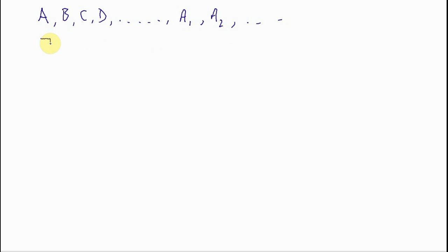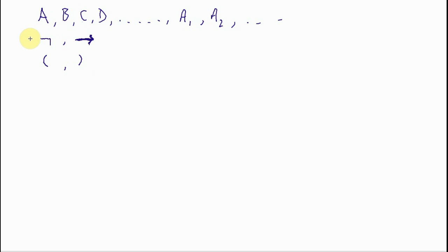We're also going to use two additional symbols: this symbol, which is rather like a reversed L tilted on its side, and this symbol — which, if my writing were a little better, would be seen as a straight line, an arrow. On top of all those symbols we will use two others, which are simply the normal parentheses. These are the symbols we're going to be using in our propositional calculus, and in a short while we'll define some others as shorthand.